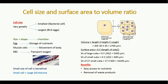Cell size varies greatly. There are some cells which are very small, for example bacterial cells which range from 0.1 to 1 micrometer, while there are some cells which are very large, for example bird eggs. Other cells lie between these two extremes.